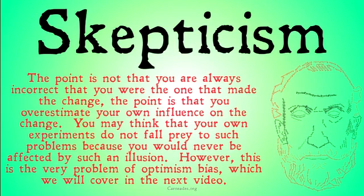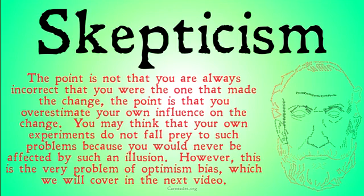You may think that your own experiments do not fall prey to such problems because you would never be affected by such an illusion — because you are aware of the illusion, because you follow the scientific method very rigorously. However, this is the very problem of optimism bias, which we're going to cover in the next video: the idea that you think you are excluded from all of these problems, when in fact, assuming you are a human and assuming the scientific realist position that these psychological claims actually affect people in the world, you are just as likely to be affected by this and any other of these cognitive biases.